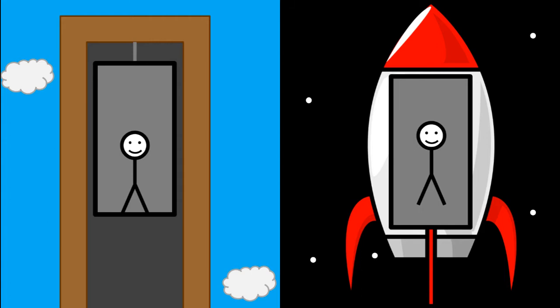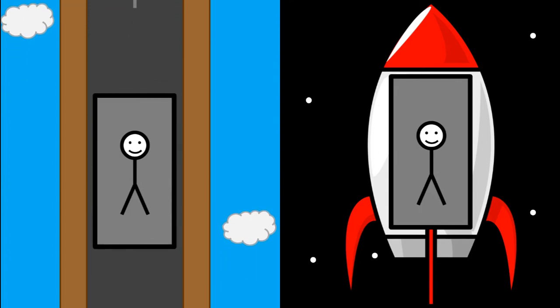Imagine men in two lifts, one in a tall lift shaft on Earth, and one in a spaceship floating weightlessly in deep space. The cable of the first lift breaks, putting it into freefall and accelerating towards the ground. Now both men are floating freely inside the lifts in the same way.